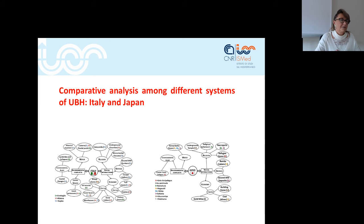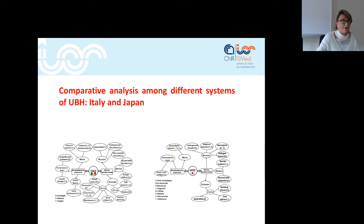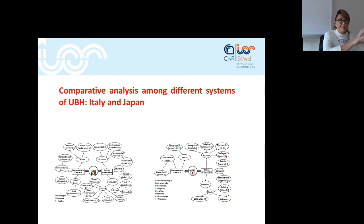As you can see, these charts can also be adapted for a comparative analysis among different systems of UBH. This is the example of Italy and Japan. On the left, you can see all the UBH elements analyzed in Italy divided by function, and on the right, the same for Japan.